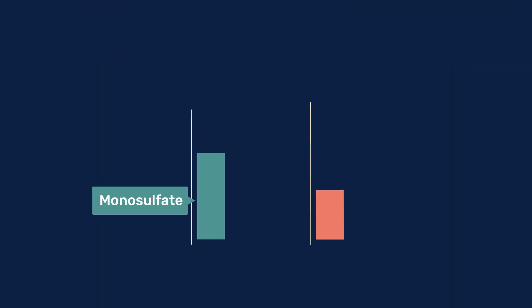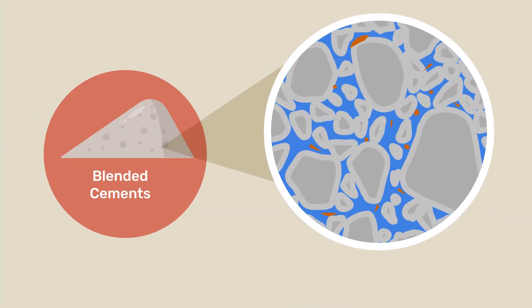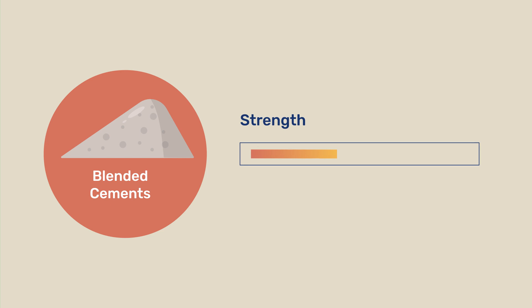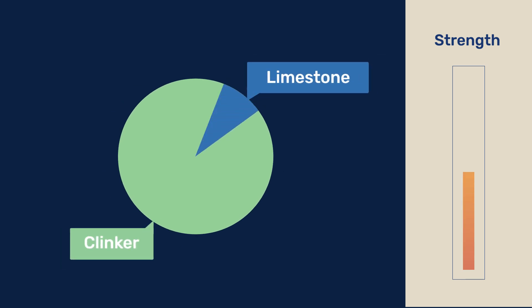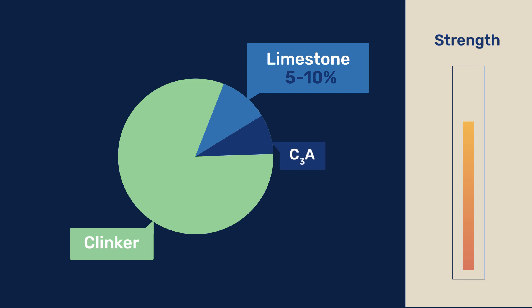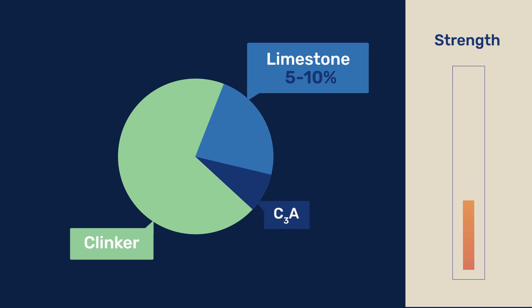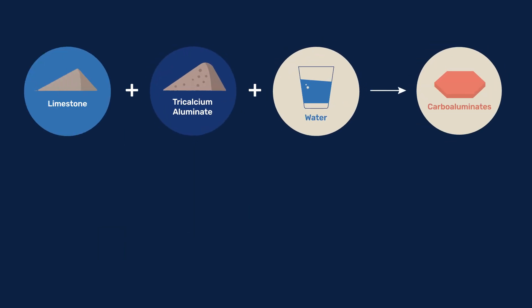The initial solid volume combining monosulphate and limestone is 1.08 and increases to 1.33 if it transforms to the combination of monocarbonate and ettringite. This corresponds to a 23% increase in solids volume that contributes to filling the porosity and thereby can make a reasonable contribution to strength gain. It can, in fact, be shown that replacing small amounts of clinker with limestone increases strength. However, because the amount of C3A is low, this effect only allows limited levels of clinker substitution in the range of 5 to 10%. Beyond that, reduced long-term strength should be expected.